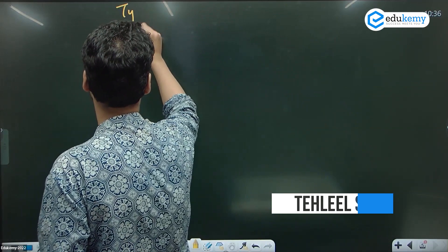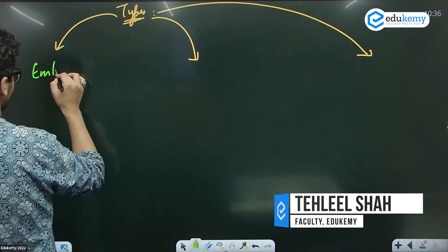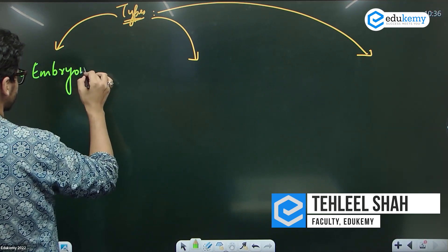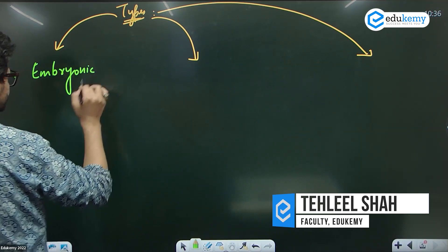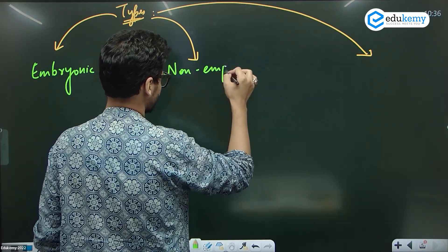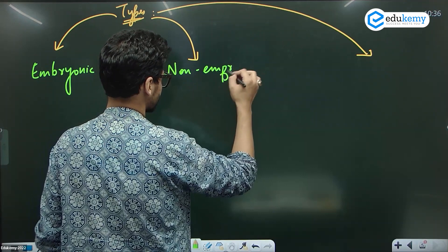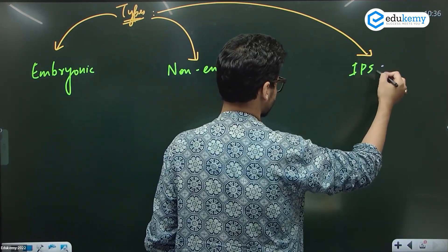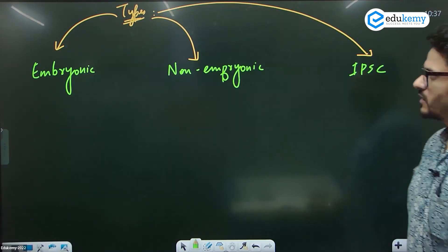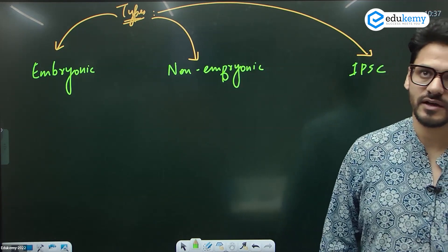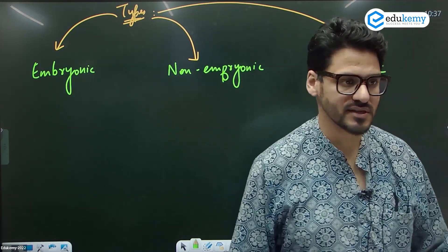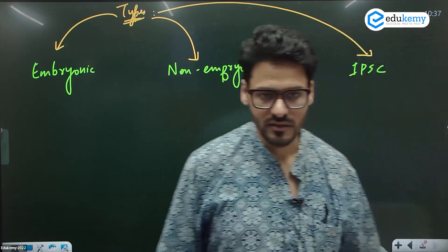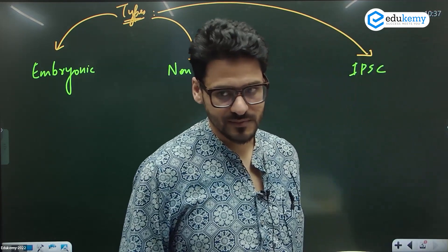Types of stem cells: embryonic stem cells, non-embryonic stem cells, and iPSC. These are the three kinds of stem cells we will discuss.